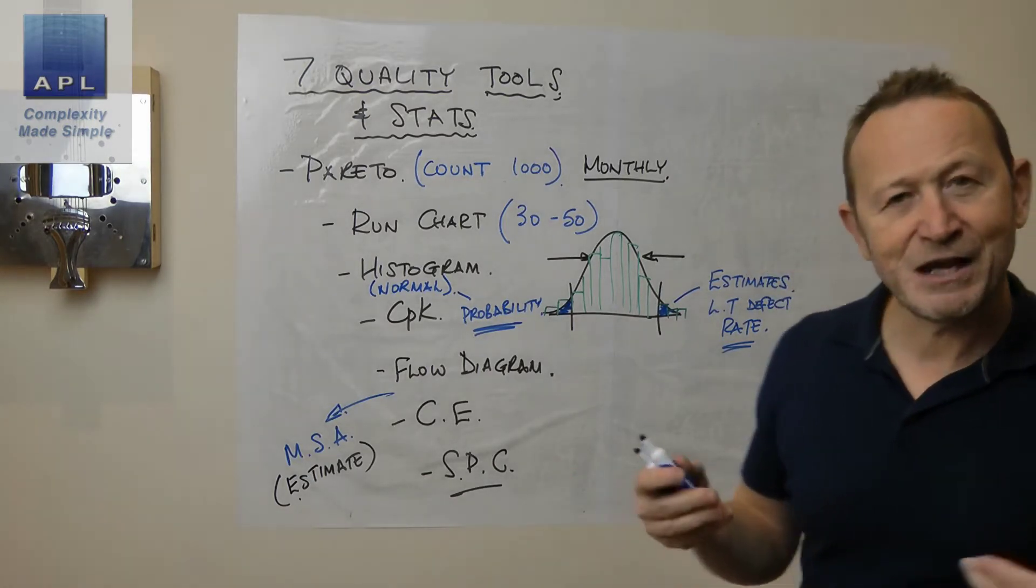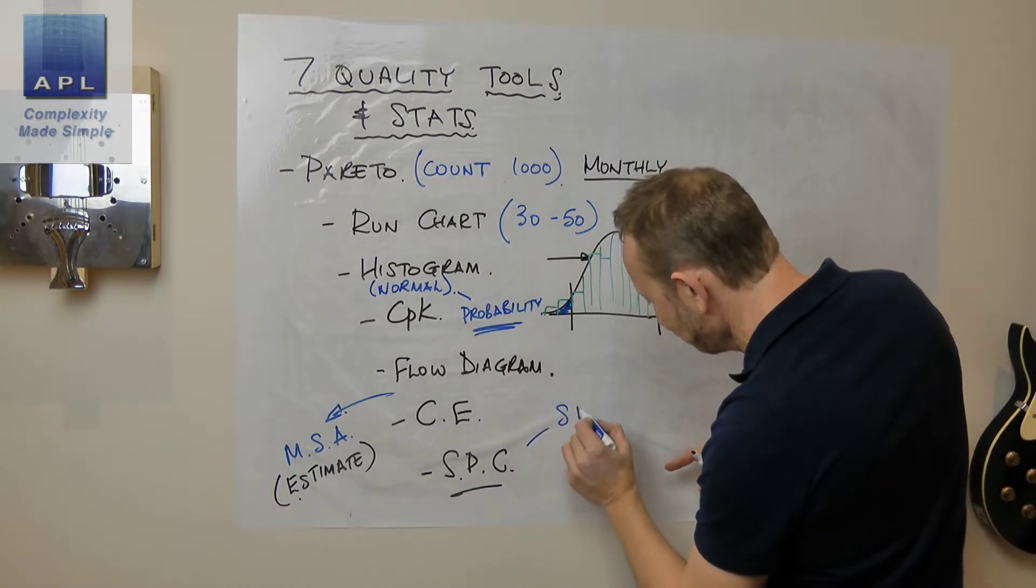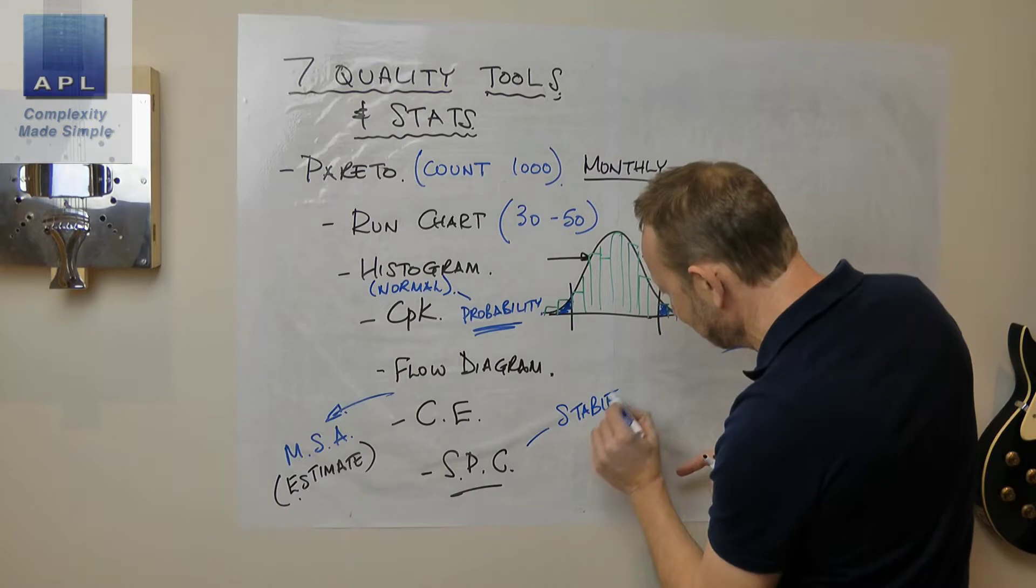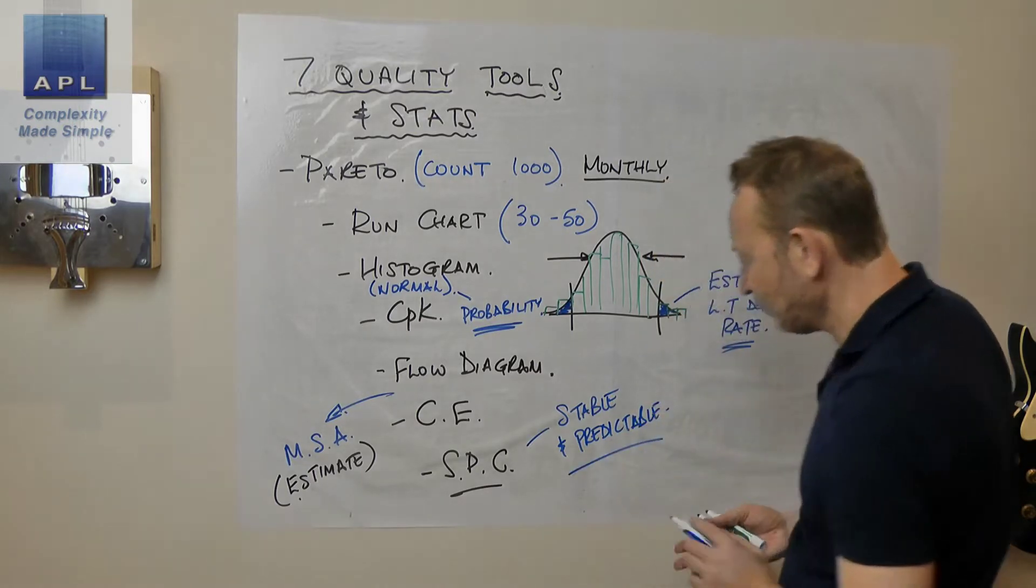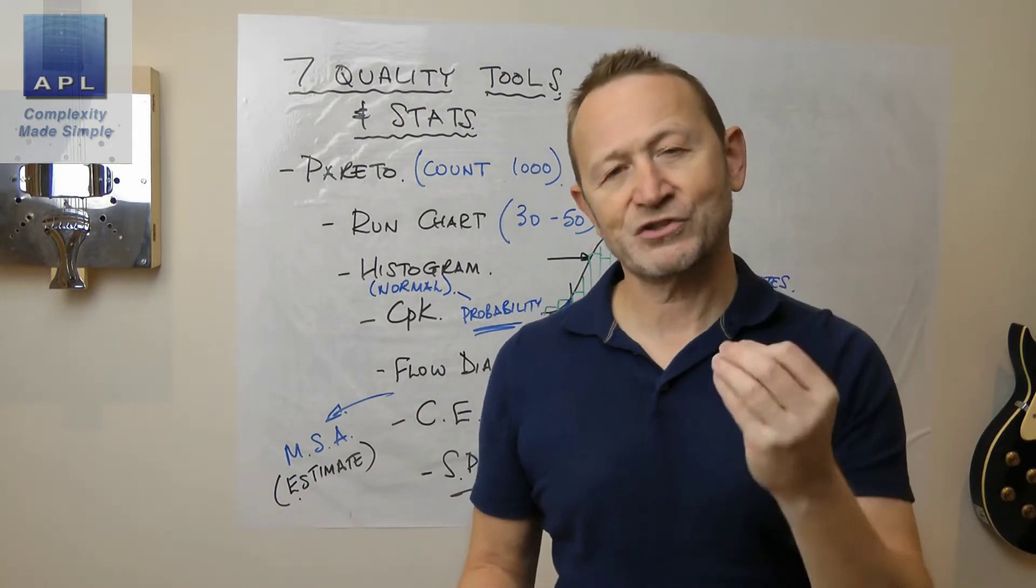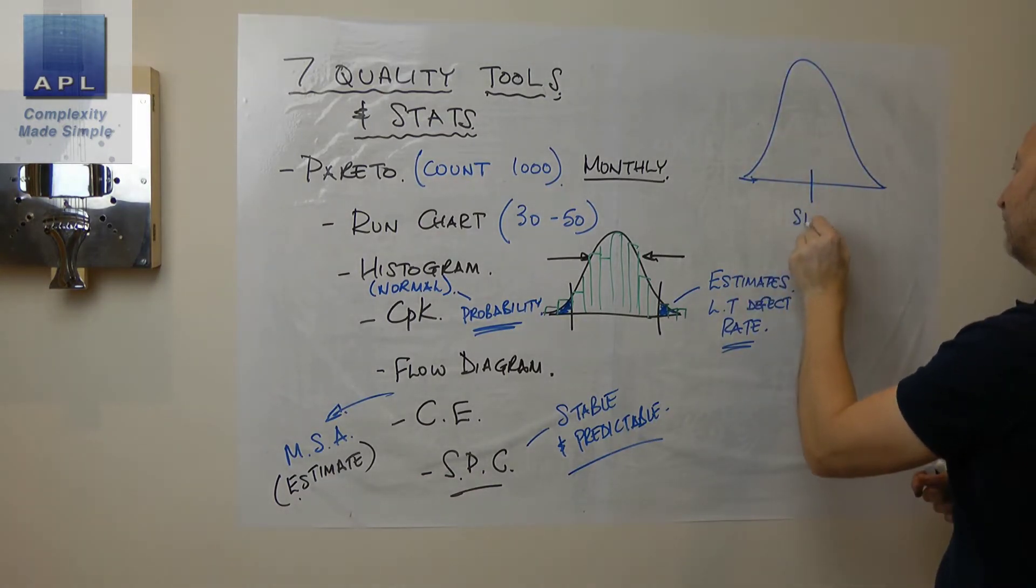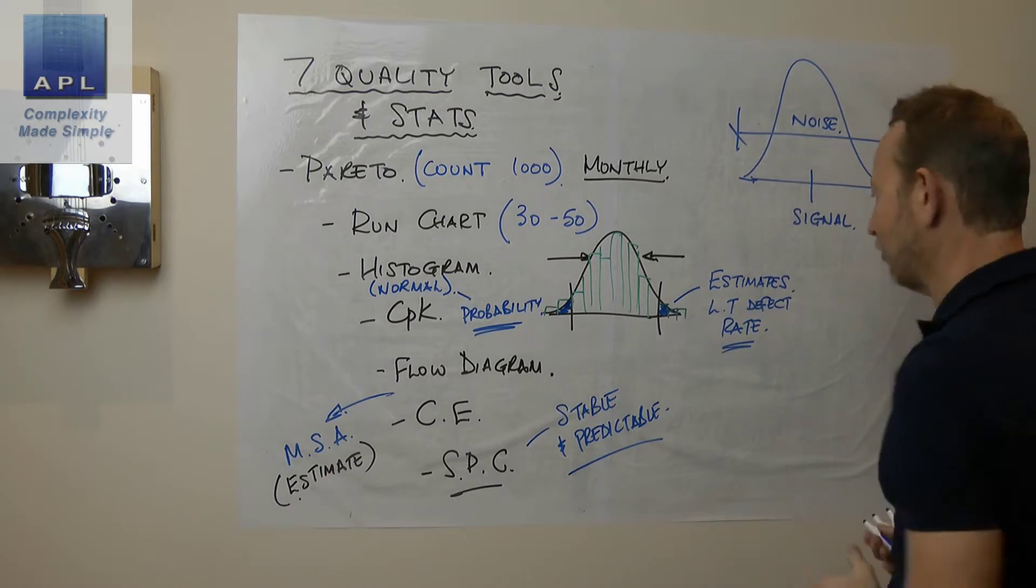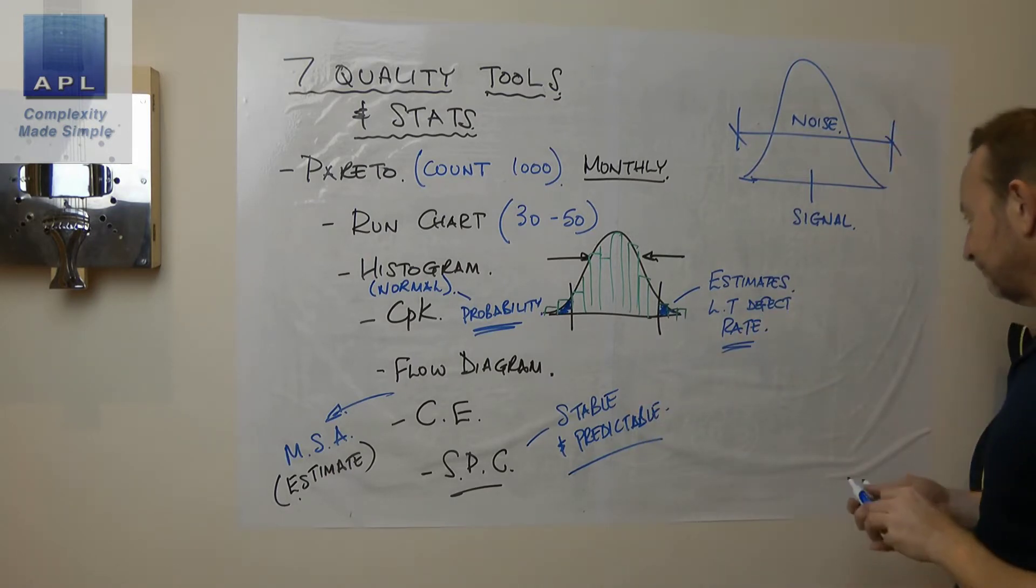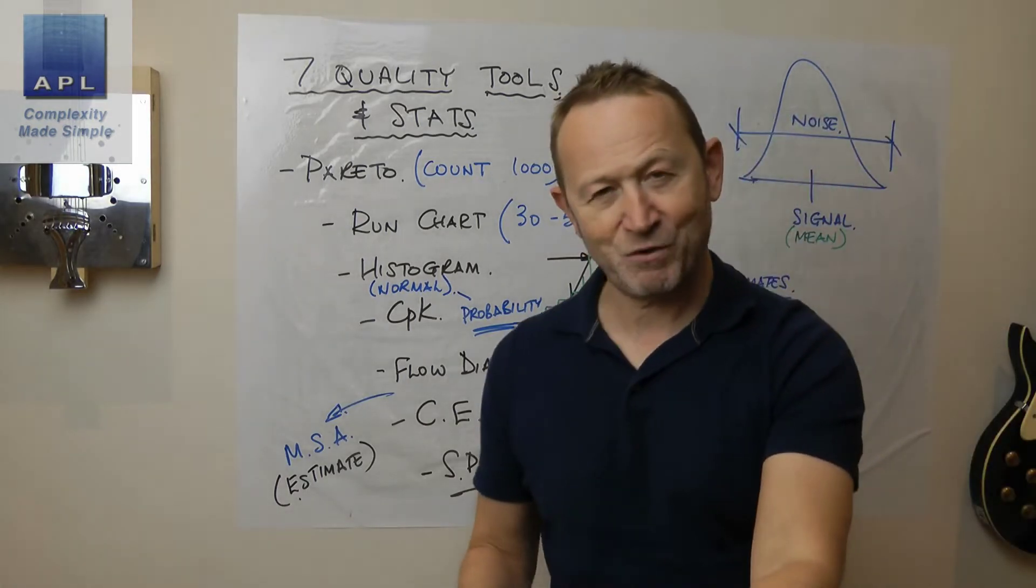Then we'll be getting to SPC. Now again, the software is going to do the calc here. But I understand the basics of SPC. A process is said to be under control when it is stable and predictable. What does that mean? Well, stable means that the signal doesn't move. Okay, so when you've got a data set, there's the signal, which is the middle. And there is the noise, which is the spread, the range of the data. When a process is stable, the signal doesn't move. In other words, the average, the mean stays where it's put. Okay